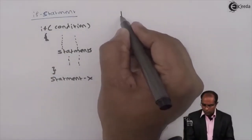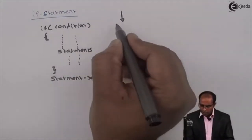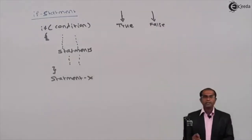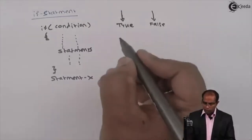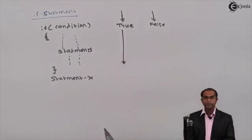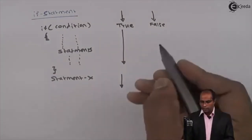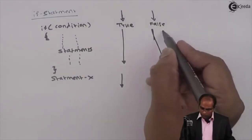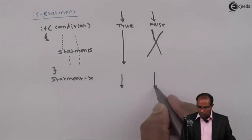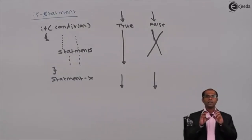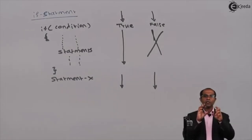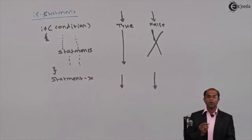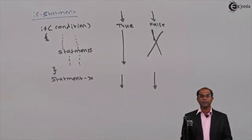Now how does this if work? First, the instruction at the top — the condition — will be tested. When the condition is tested, it will result into either true or false. Case one: when the condition is true, it executes all the statements in the curly bracket and then proceeds to statement x. Case two: when the condition is false, it ignores all the instructions written inside the if block and then proceeds to statement x. So at any given time, the block of statements is either selected or ignored based on the result of the condition.